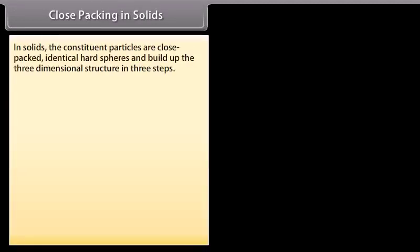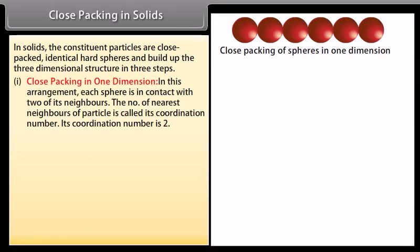In solids, the constituent particles are close packed as identical hard spheres and build up the three dimensional structure in three steps. In close packing in one dimension, each sphere is in contact with two of its neighbours. The number of nearest neighbours of a particle is called its coordination number; here the coordination number is 2.